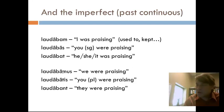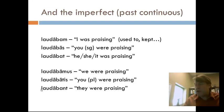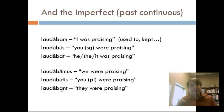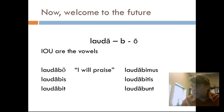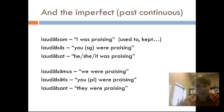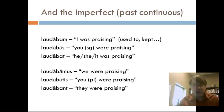A helpful mnemonic: the future has an I — bo, bis, bit — while the past, like the word 'was,' has an A in it. If the second-to-last syllable is long, that's where the stress goes; if not, the stress goes on the third-to-last syllable. So it's laudabAmus, because that A is long, but laudAbant, because that A is short. Pronunciation isn't critical if you're focused on reading Latin rather than speaking it.